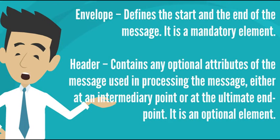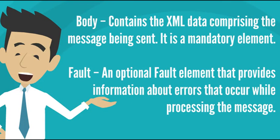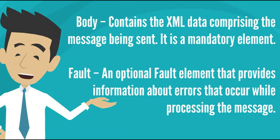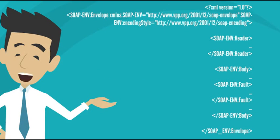The SOAP message is an ordinary XML document containing the following elements: Envelope, Header, Body, and Fault. The Envelope defines the start and end of the message and is mandatory. The Header contains optional attributes used in processing the message at an intermediary point or ultimate endpoint. The Body contains the XML data comprising the message and is mandatory. The optional Fault element provides information about errors that occur while processing the message.